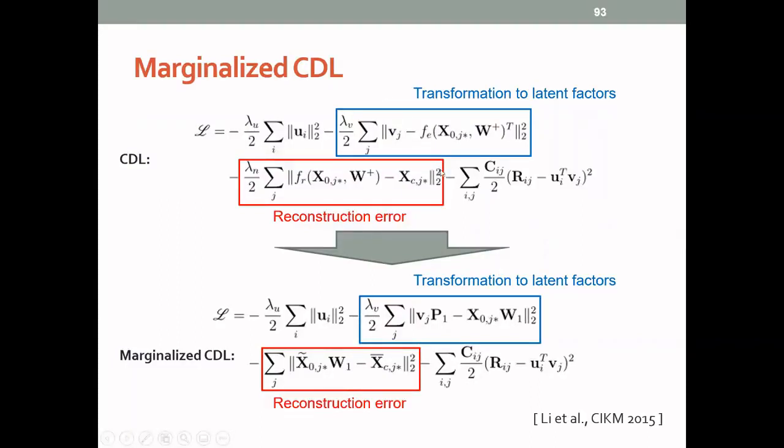Remember that the CDL actually has a very deep encoder. So this is multiple layers of linear and non-linear transformation in this encoder FE, and in this FR it's actually both encoder and decoder, so a single model. And the idea of marginalized CDL is to marginalize all these layers, all these multiple layers, and combine them into one single linear.